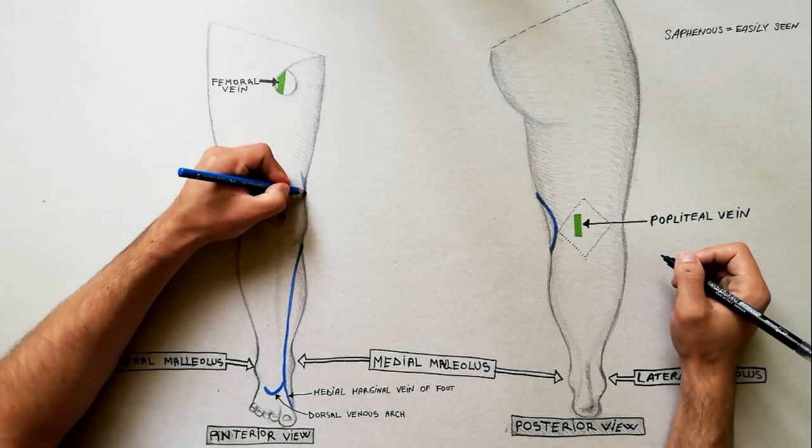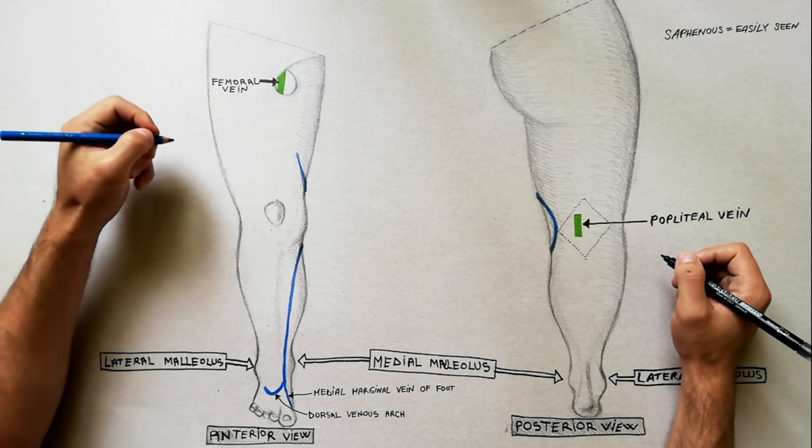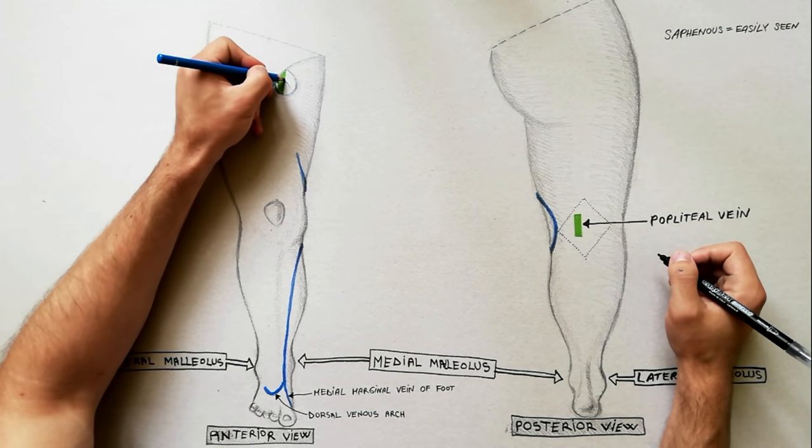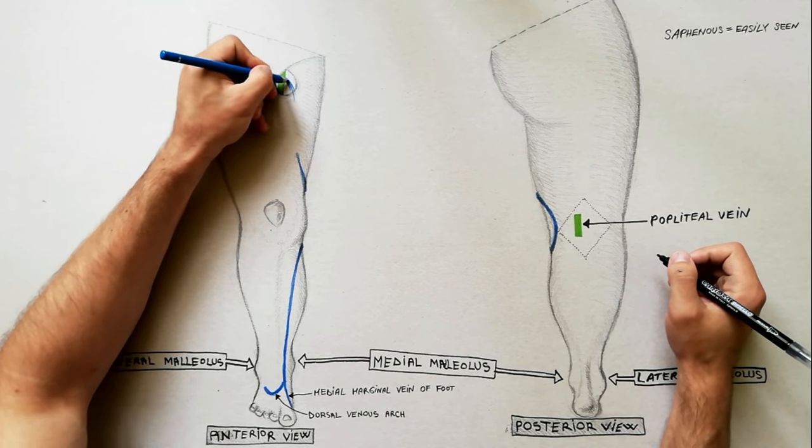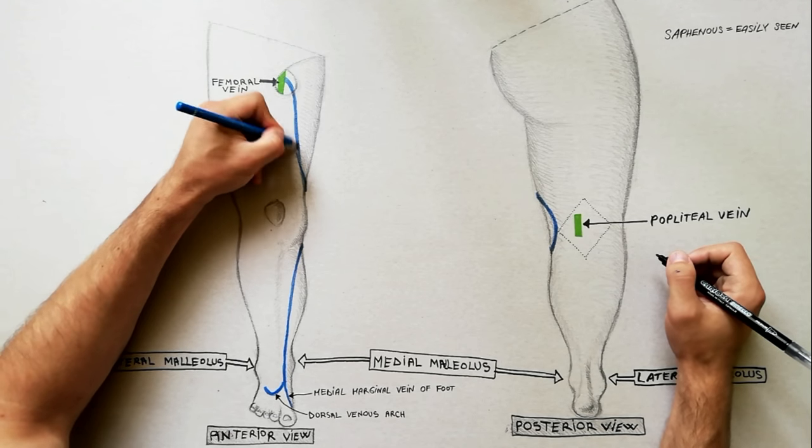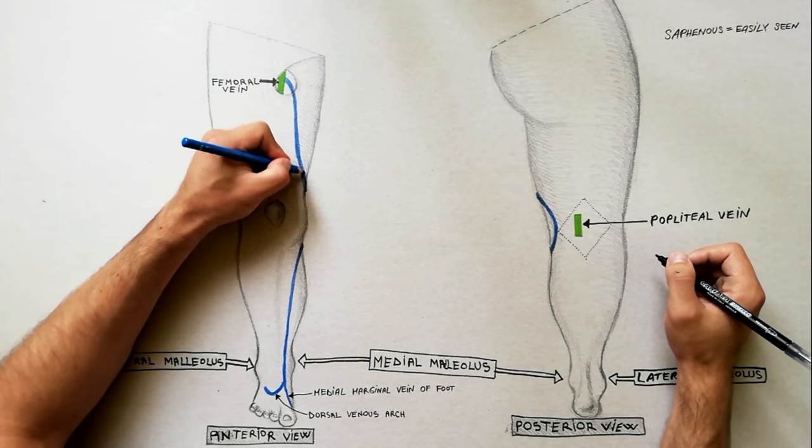From here it runs upward along the medial side of the thigh to reach the great saphenous opening, also called fossa ovalis. It passes through the saphenous opening and drains into the femoral vein.